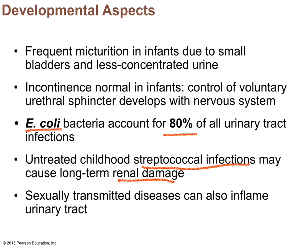Frequent urination in infants is due to less concentrated urine, small bladders, and lack of voluntary control over the external urethral sphincter. E. coli accounts for 80% of all urinary tract infections. Streptococcal infections can actually cause kidney damage — important to treat with antibiotics. STDs can inflame the urinary tract but don't affect reproductive fertility in the way UTIs do, though they can cause urinary tract inflammation.